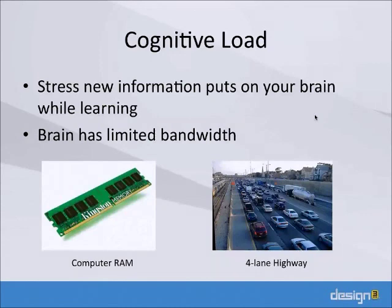Cognitive load is pretty intuitive — you have a finite amount of information you can process at once in your brain. There's a theory that your brain can only hold seven pieces of information in short-term memory at a time. Like computer RAM, you have a given amount you can deal with. If you want to put in new information, you've got to get rid of some old information, so you need to make sure new information is retained before moving on. Otherwise it's just lost in a wave of new information.